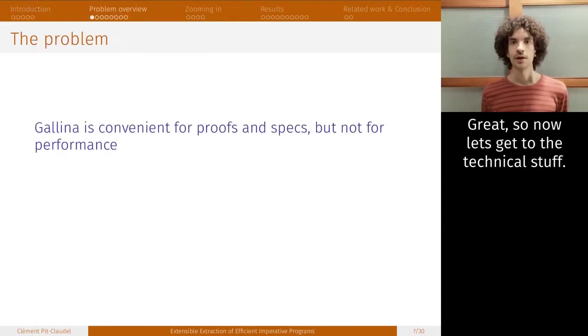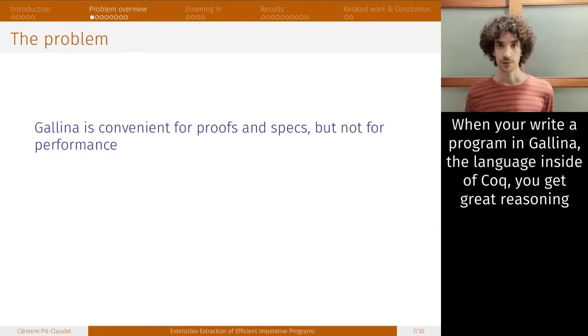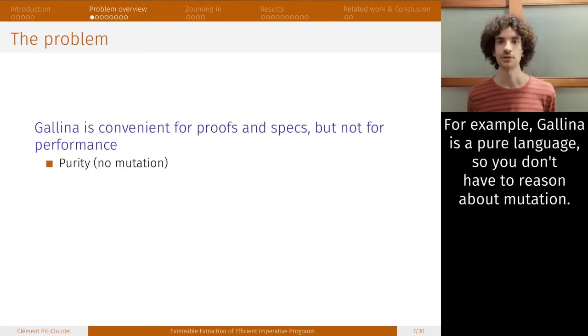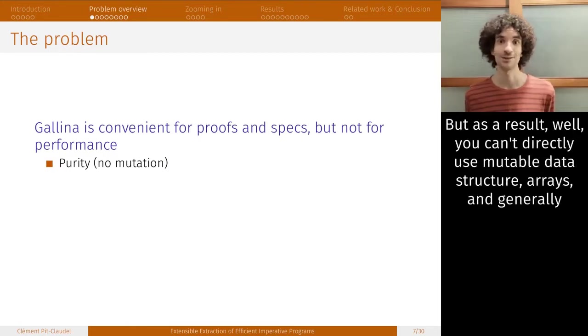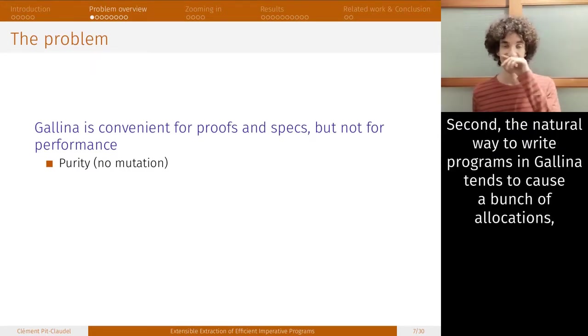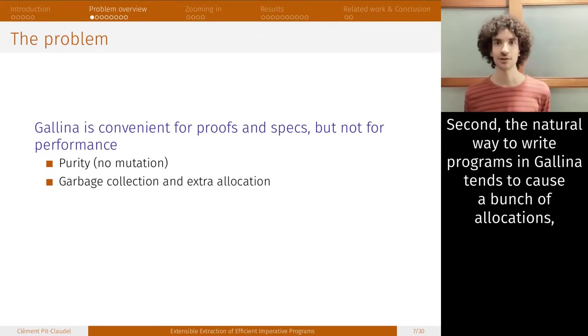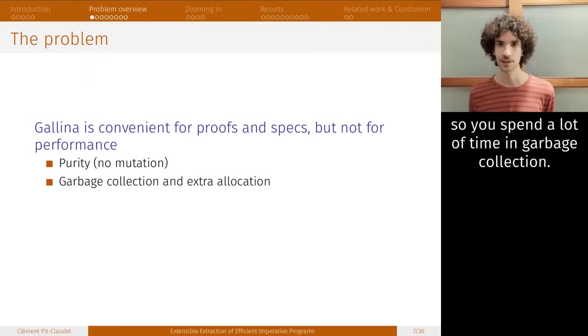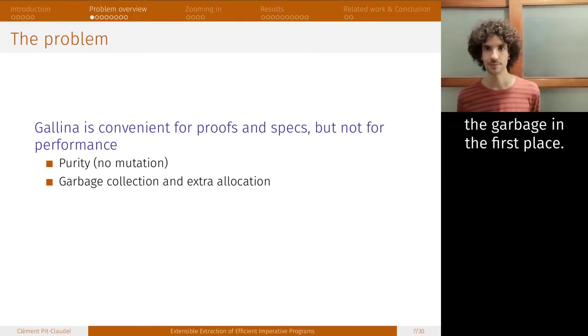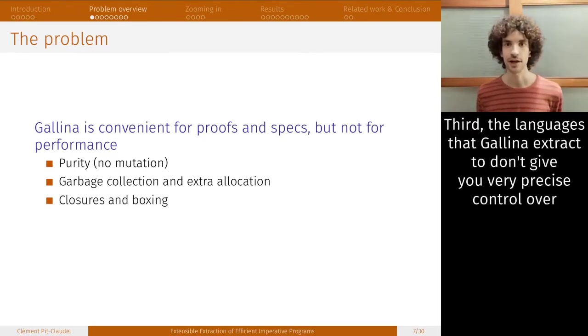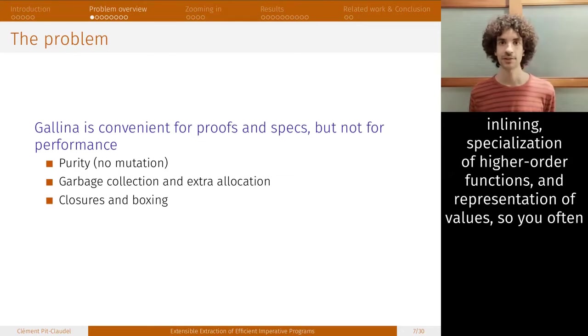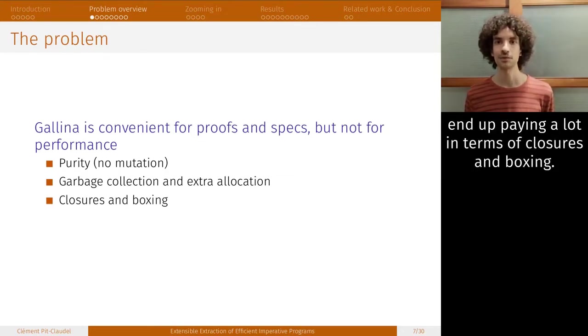When you write a program in Galena, the language inside of Coq, you get great reasoning facilities, but the performance is not the best. For example, Galena is a pure language, so you don't have to reason about mutation. But as a result, you can't directly use mutable data structures, arrays, and generally you end up doing a lot of pointer chasing in your final implementation. Second, the natural way to write programs in Galena tends to cause a bunch of allocations, so you spend a lot of time in garbage collection. Third, the languages that Galena extracts don't give you very precise control over inlining, specialization of higher order functions, and representation of values, so you often end up paying a lot in terms of closures and boxing.